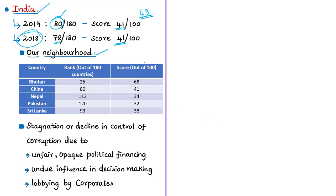Among India's neighbours, the best performer is Bhutan, ranked at 25th position with a score of 68. China has a score of 41 and is also ranked at 80th position, same as India. The least performer among neighbours is Pakistan, ranked at 120th position with a score of 32. The index raises specific criticism against democracies like India and Australia, where several factors have resulted in stagnation or decline in the control of corruption.